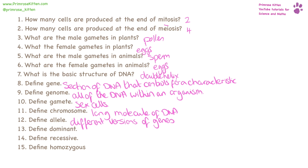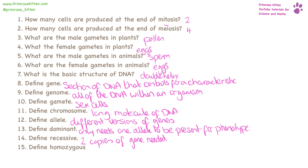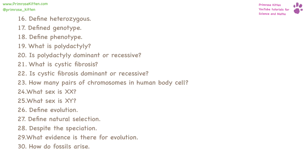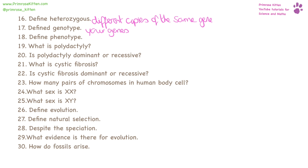If a gene is dominant, it only needs one allele to present it as the phenotype. If a characteristic is recessive, it needs two identical versions of the gene for it to present itself. Homozygous means it has two identical copies of the gene. Heterozygous means it has different copies of the same gene. Your genotype are the genes that you have. Your phenotype are the characteristics that you have.